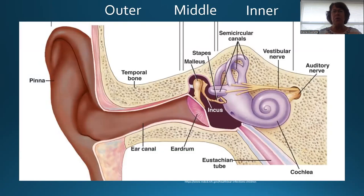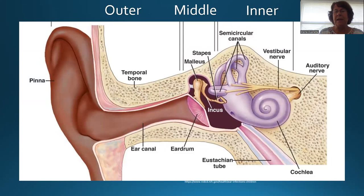The human ear has three main parts: the outer ear, the middle ear, and the inner ear. The middle ear has three bones that you're going to need to be aware of: the malleus, the stapes, and the incus. In your early school nursing days, you may remember this as the hammer, the anvil, and the stirrup.